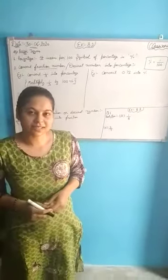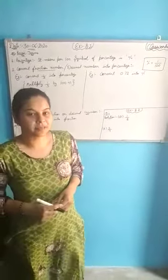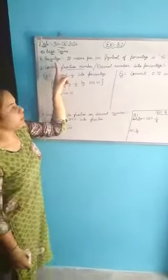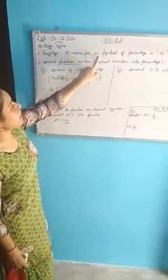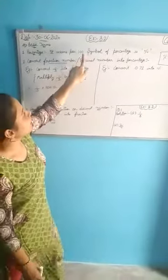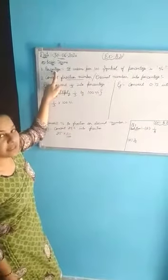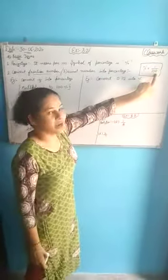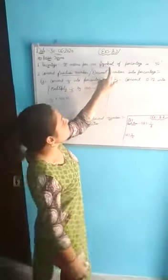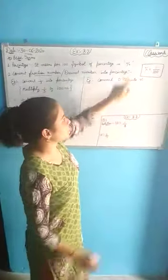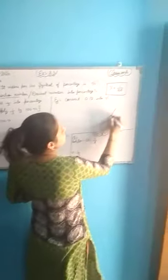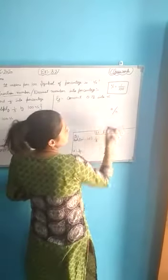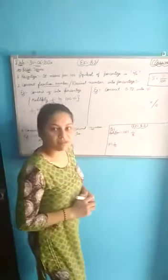Now we shall discuss our next topic of exercise 8.2, that is percentage. What is it? It means per hundred. That means if we are saying percentage, it means per hundred — 1 by 100. The symbol of percentage: how can we draw it? We will just draw a counting line and two more circles. That is the symbol of percentage.